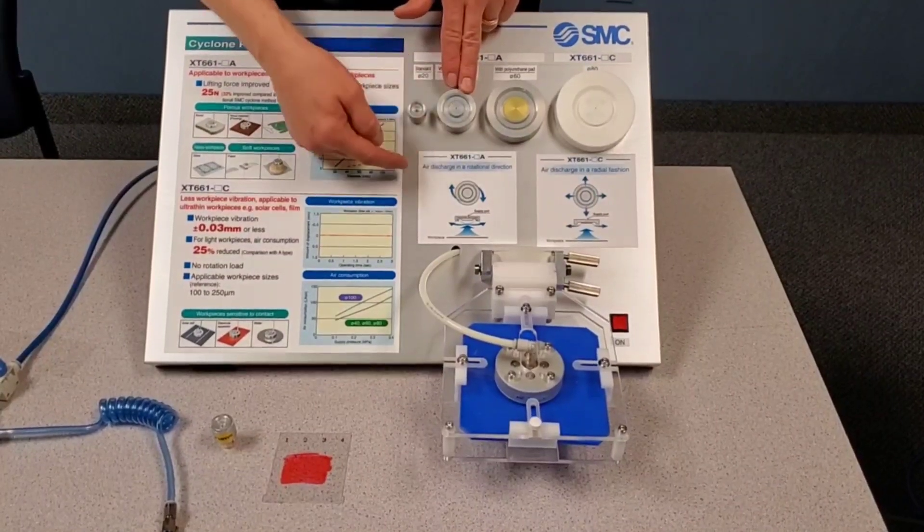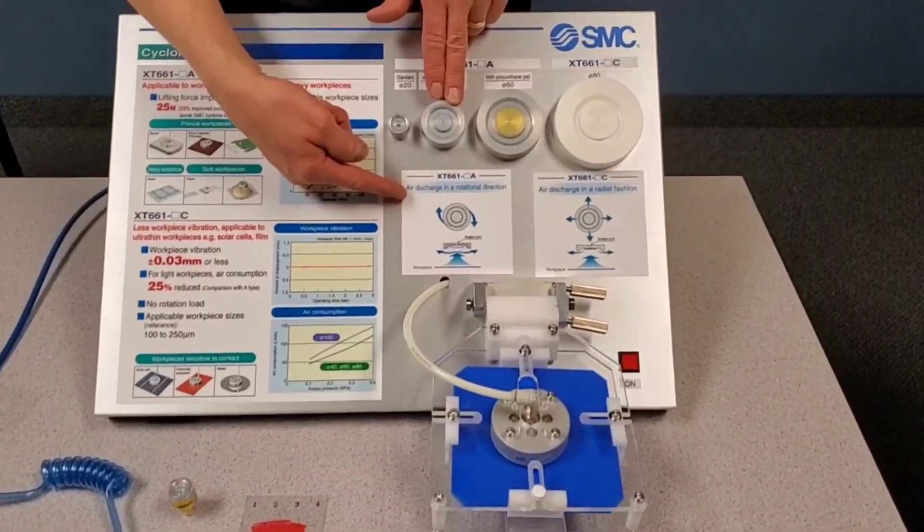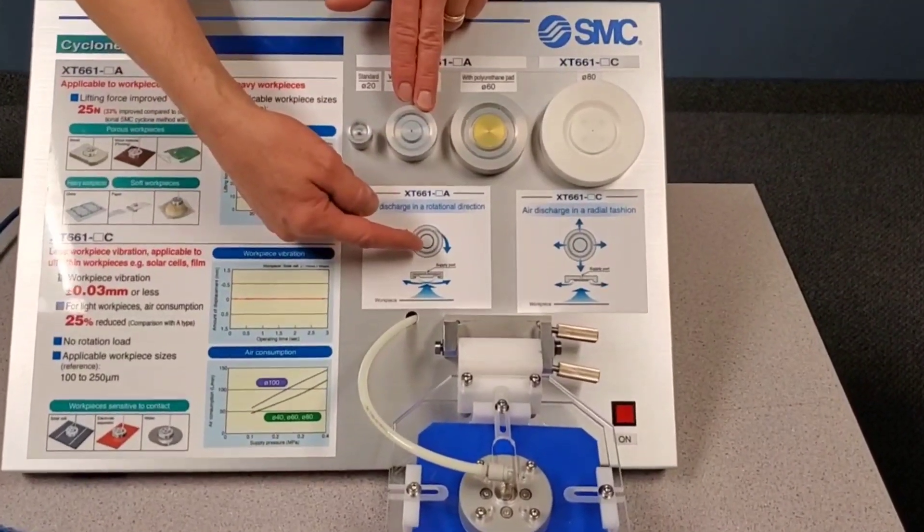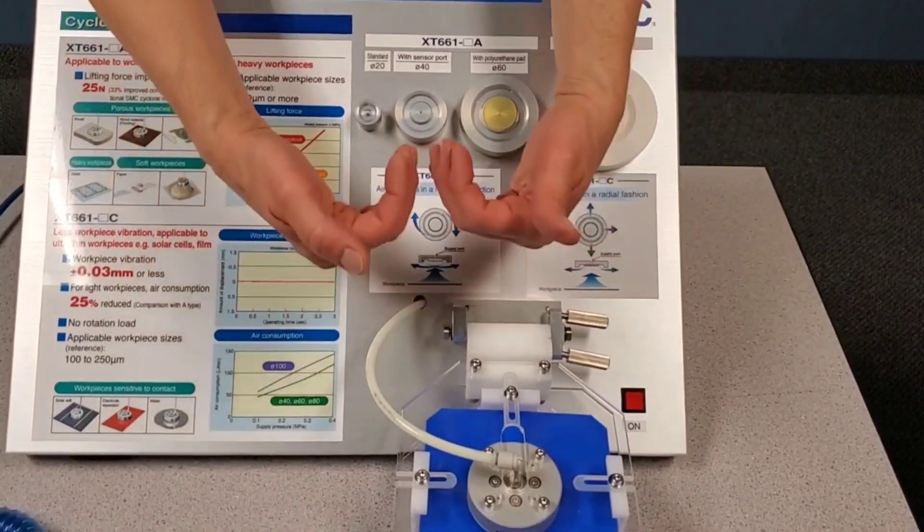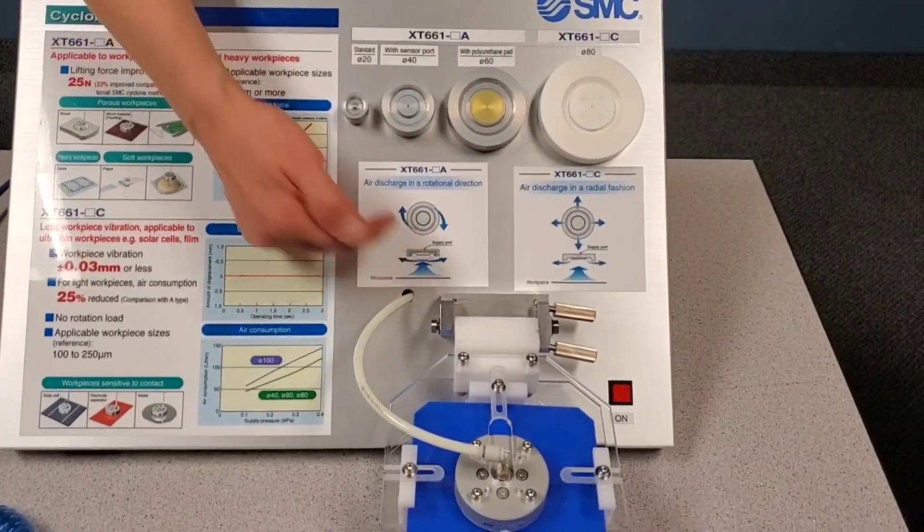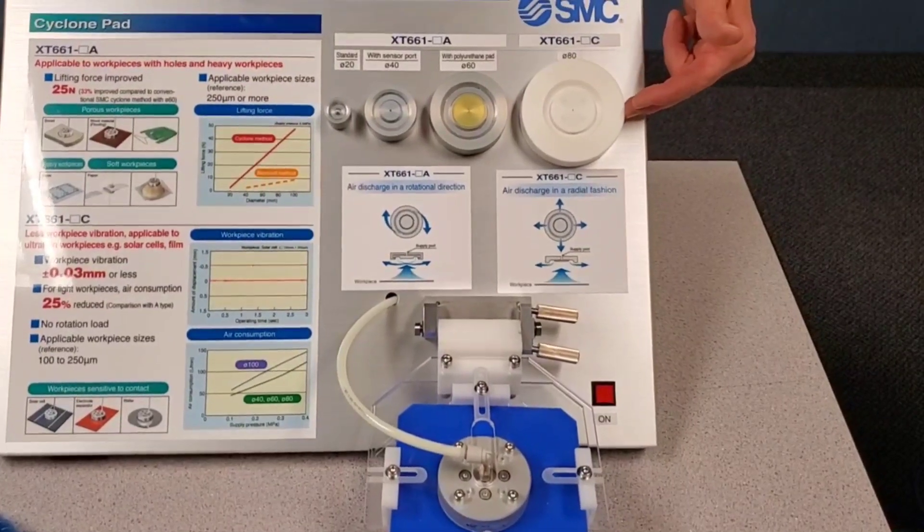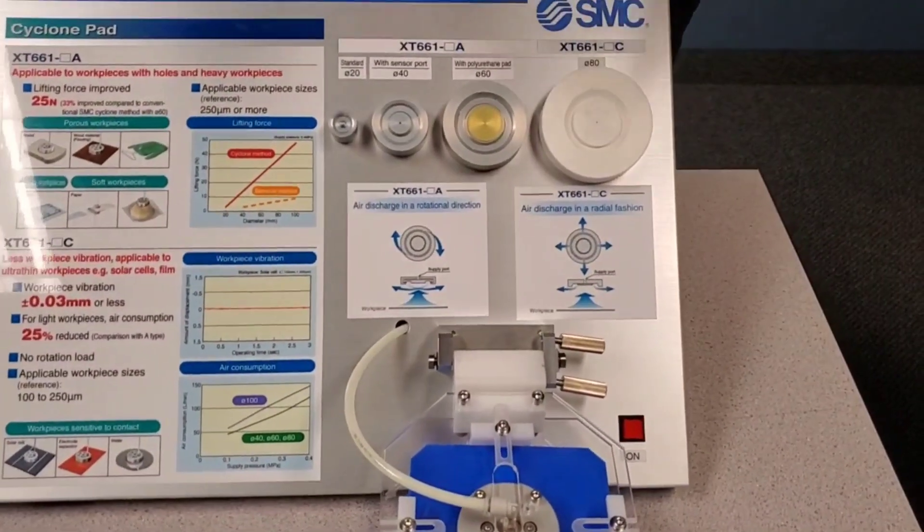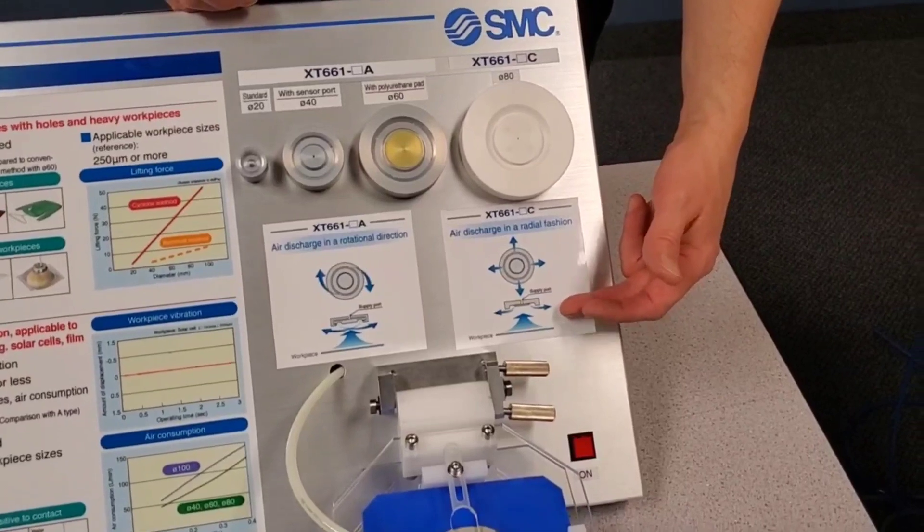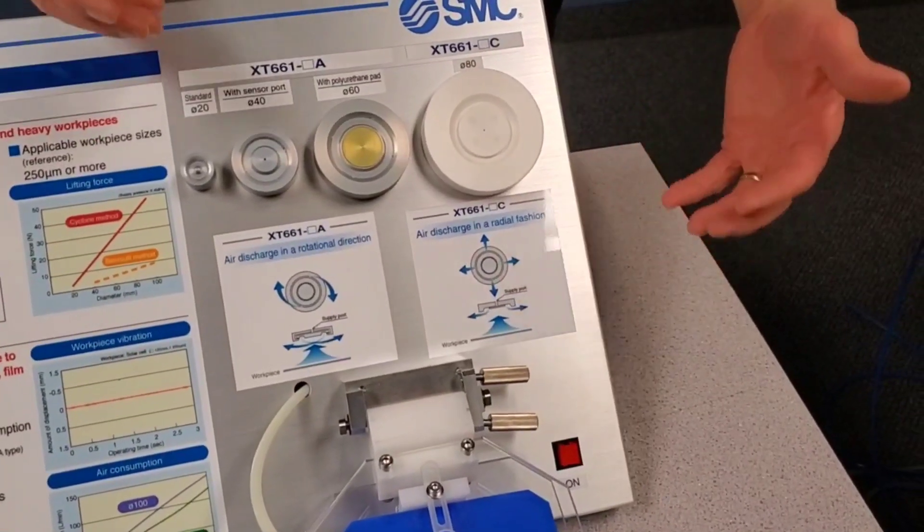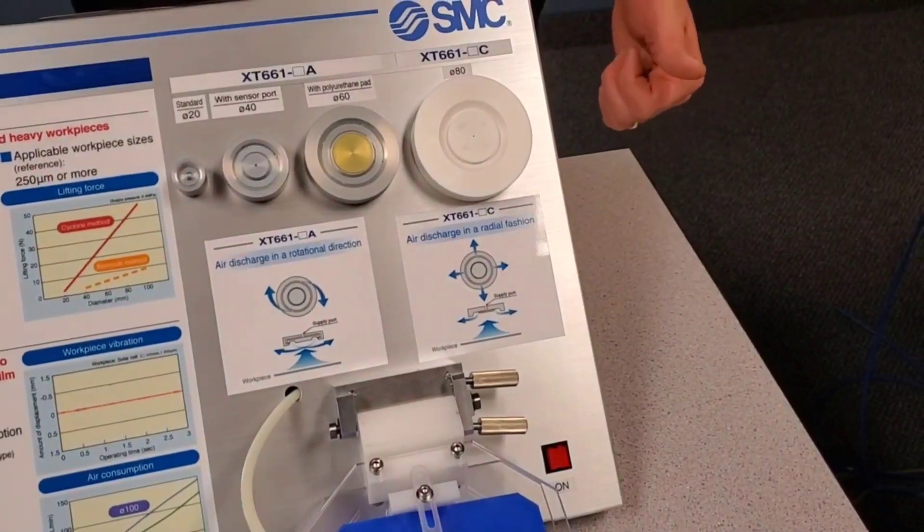The cyclone is because the air is discharging in a circular motion and is creating a negative pressure in the middle underneath the cup. The Bernoulli cup, the air discharges in a radial pattern, again creating a negative pressure or a suction in the middle of the cup.